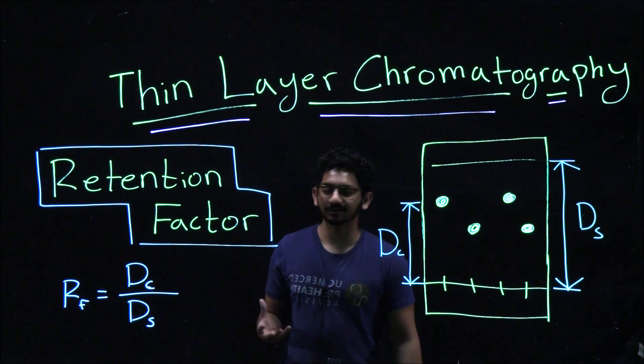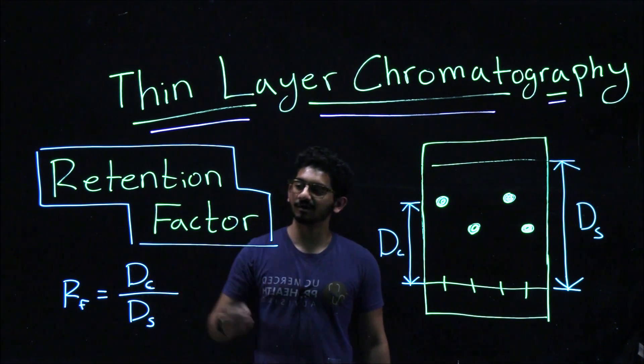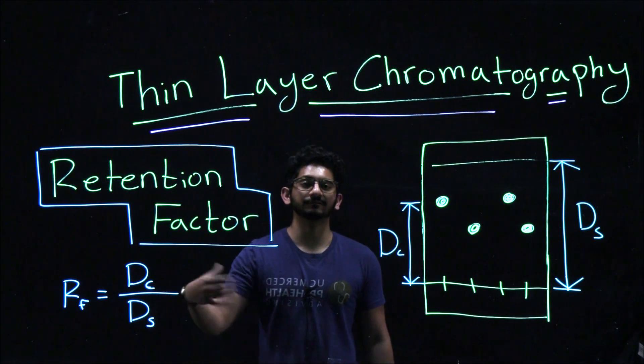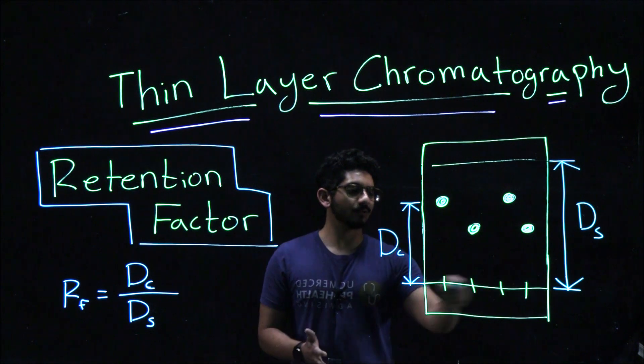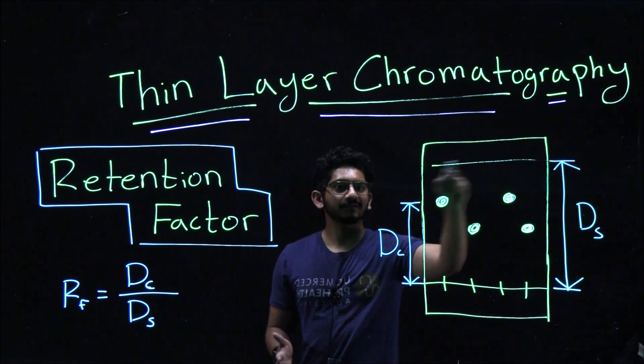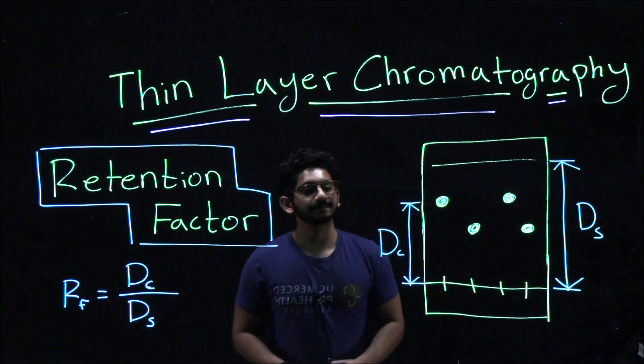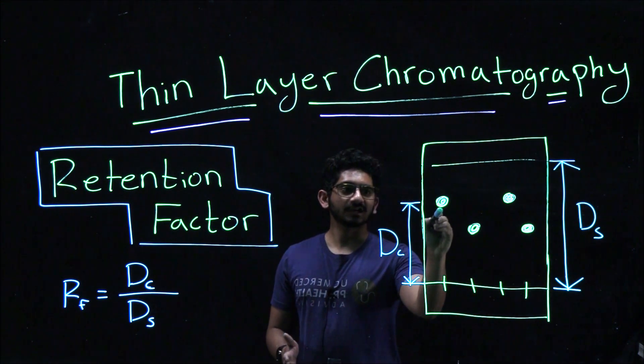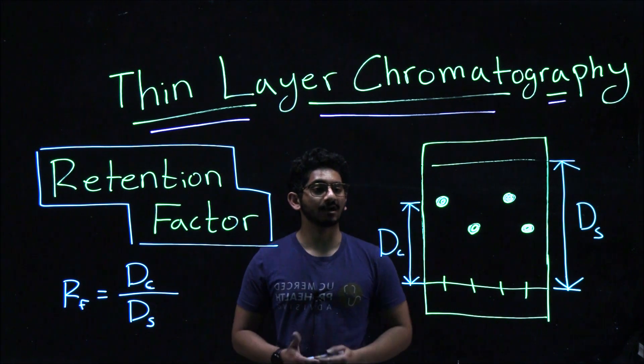The retention factor is shown by this equation, where we have the distance traveled by our compound divided by the distance traveled by our solvent. If we look at a TLC plate, from this origin, we drew a solvent front. The origin to the solvent front would be your distance traveled by the solvent, and from the origin to the actual spot that you previously traced would be your distance of your compound.